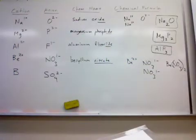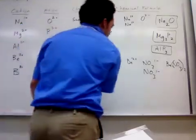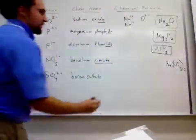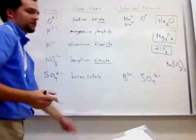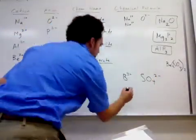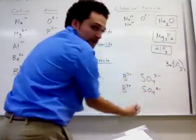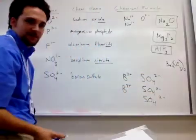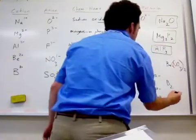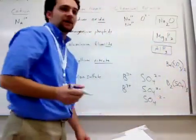Next one: boron. Boron has a positive three charge — it loses three electrons — and sulfate has a negative two charge. So this is called boron sulfate. Balancing the charges: B³⁺ and SO₄²⁻. Those don't balance equally — positive three and negative two. Add another boron: positive six. Add another sulfate: negative four. Add another sulfate: negative six. Positive six and negative six equals zero. So the formula is B₂(SO₄)₃ — SO₄ is in parentheses because it's polyatomic, and I have three of them.